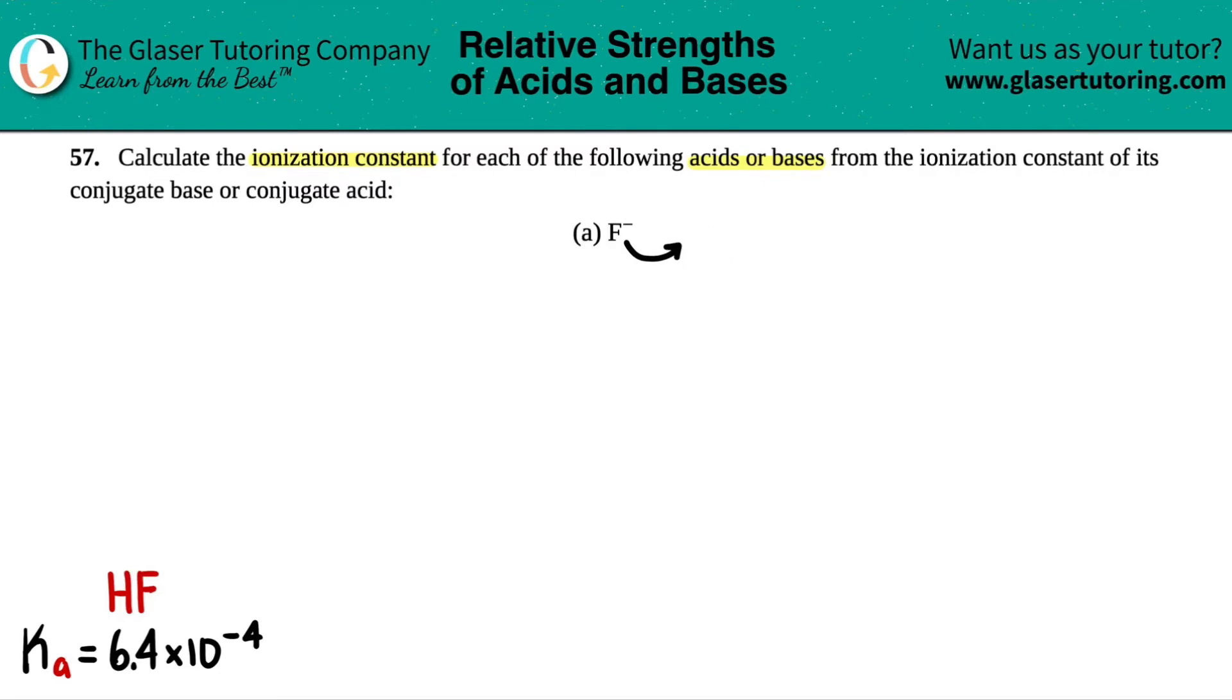And if it's a base, that means we have to be looking for a Kb. So I went to the back of a textbook and I found out that HF, hydrofluoric acid, has a Ka of 6.4 times 10 to the negative fourth.